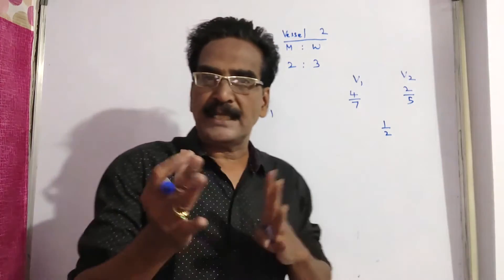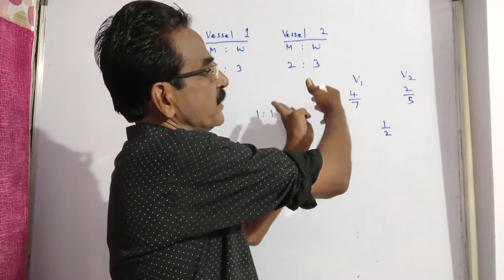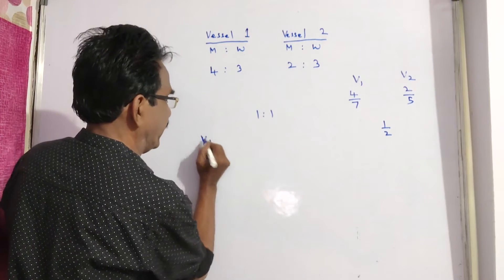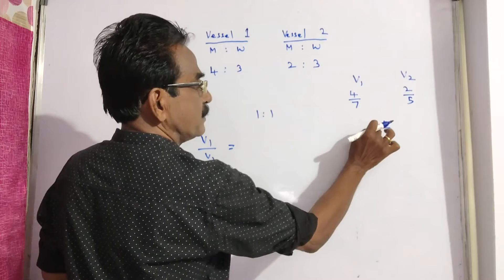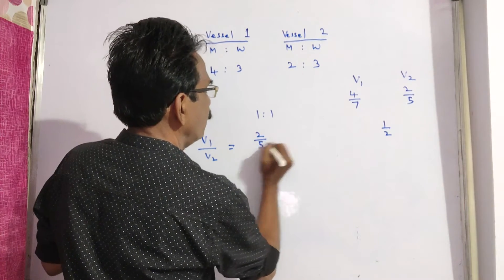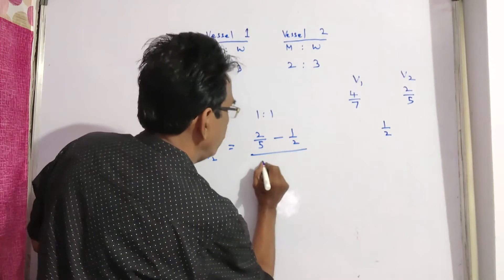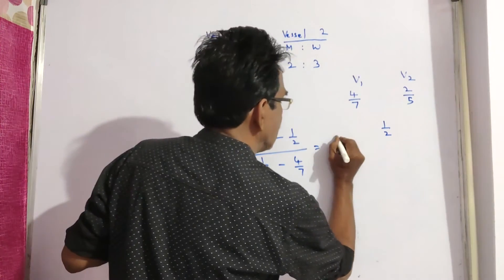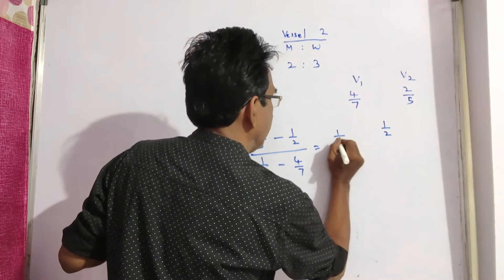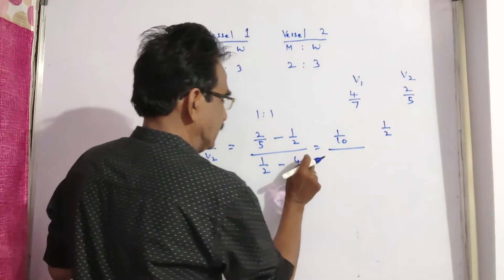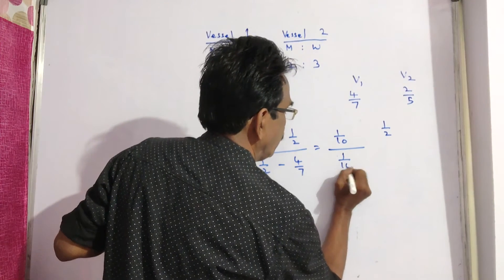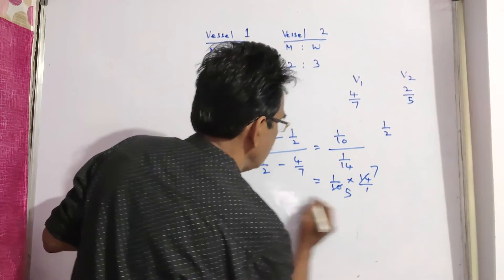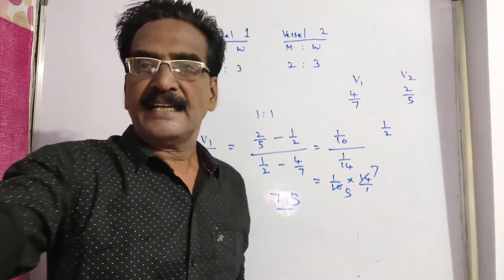By the rule of allegation, we get the quantities ratio in which the mixtures from vessel 1 and vessel 2 must be taken. That ratio V1 by V2 is given by: (2 by 5 minus 1 by 2) divided by (1 by 2 minus 4 by 7). This gives 1 by 10 divided by 1 by 14, which equals 14 by 10, simplified to 7 is to 5. So 7 is to 5 is the required ratio.